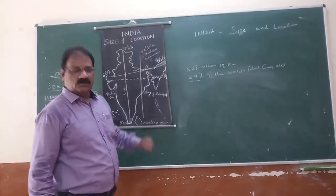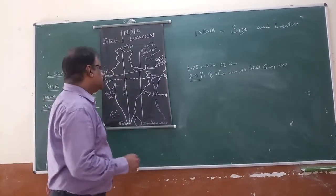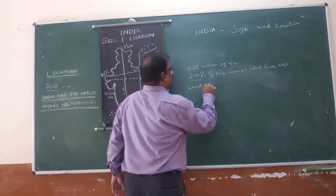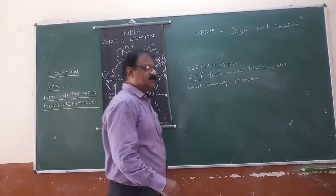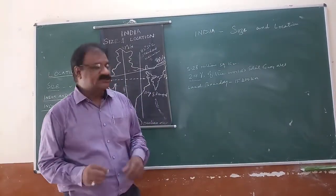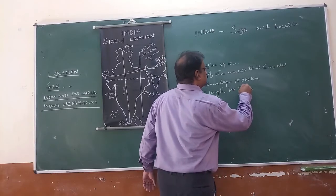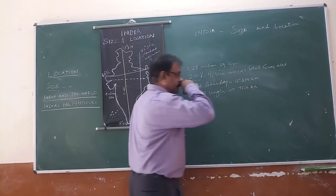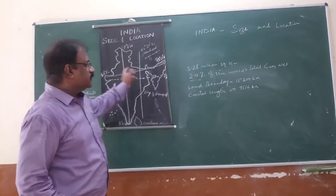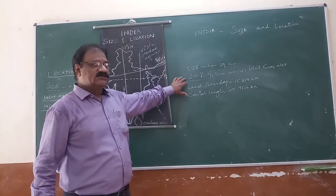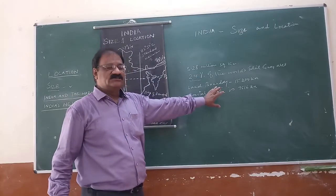Let us talk about the land boundary of India. India has a total land boundary of 15,200 kilometers. The total coastal length of India is 7,516 kilometers. So the total geographical area is 3.28 million square kilometers, which is 2.4% of the world's total geographical area, with a land boundary of 15,200 km and a coastal length of 7,516 km.